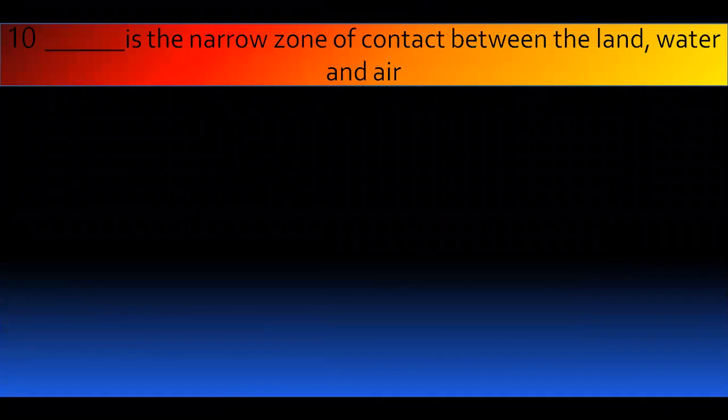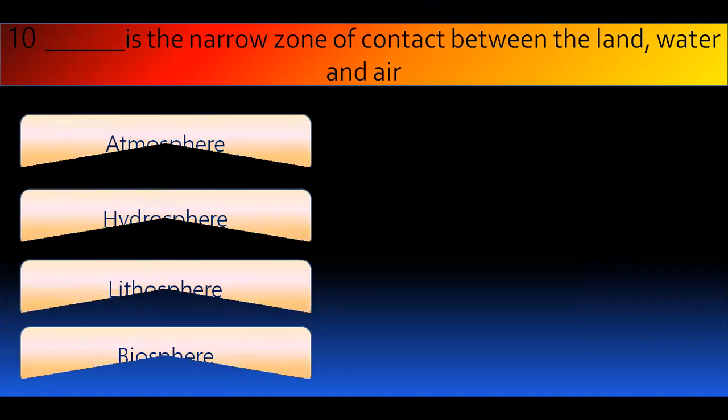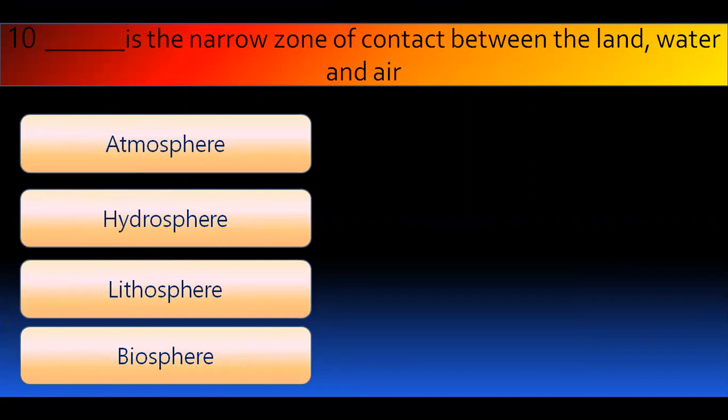Last question. Dash is the narrow zone of contact between the land, water and air. Narrow zone, where does the contact happen between land, water, and air? What is it called? Atmosphere, Hydrosphere, Lithosphere, or Biosphere. And the right answer is Biosphere.